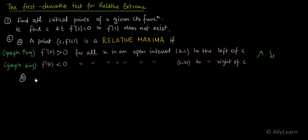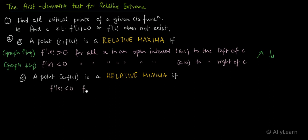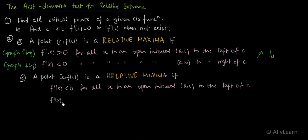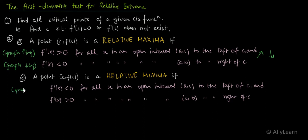Similarly for relative minima: a point (c, f(c)) is a relative minima if f'(x) < 0 for all x in the open interval (a, c) to the left of c, and f'(x) > 0 for all x in the open interval (c, b) to the right of c. Both conditions must be true simultaneously — meaning the graph is decreasing on the left and increasing on the right, so the critical point will be a relative minima.